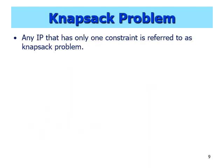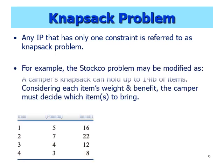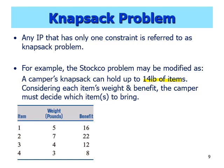An integer programming problem with only one constraint can also be called a knapsack problem. We can convert the previous problem into one of deciding which items to take in a knapsack with limited capacity. For example, we have a knapsack that can hold up to 14 pounds, each item has its own weight and benefit, and we pick items to maximize total benefits without exceeding the 14-pound capacity.